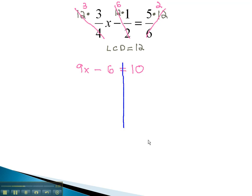Notice, now we have a two-step equation, which we can quickly solve. First, by adding and subtracting, moving away from x, we add 6 to both sides. Now, we have 9x equals 16. Finally, to get x alone, we divide both sides by 9, and x is equal to the fraction 16 over 9.